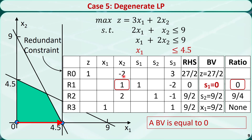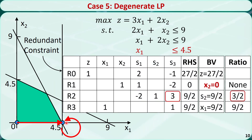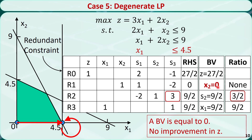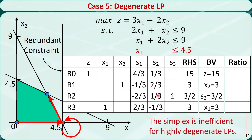x2 becomes the entering variable and we perform another pivot. The updated tableau shows we move from a point to itself — the z value did not improve, remaining at 27/2, and we still have a basic variable equal to 0. This confirms degeneracy. Continuing the simplex iteration with S3 as the entering variable, we move to a new point and the z value improves from 27/2 to 15. The optimal tableau shows all non-basic variable coefficients are positive, confirming a unique optimal solution. Therefore, degeneracy caused extra iterations in the simplex method.